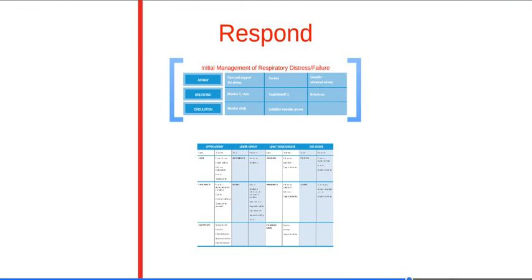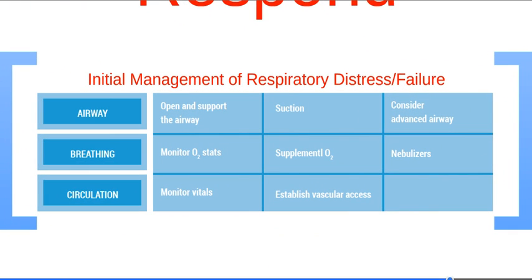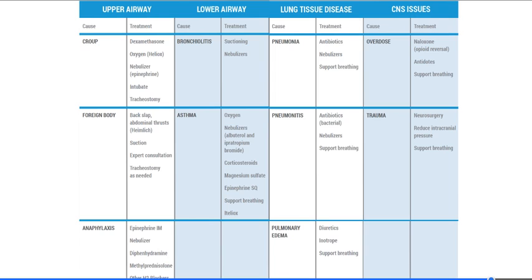Next, let's talk about how to respond to respiratory distress or failure. Initial management includes opening the airway, suctioning, and considering an advanced airway. Management of breathing includes monitoring oxygen stats, giving supplemental oxygen and nebulizers. Management of circulation involves monitoring vital signs and establishing vascular access. Here is a chart describing the treatments for upper airway, lower airway, lung tissue disease, and CNS issues for respiratory distress or failure in children and infants.